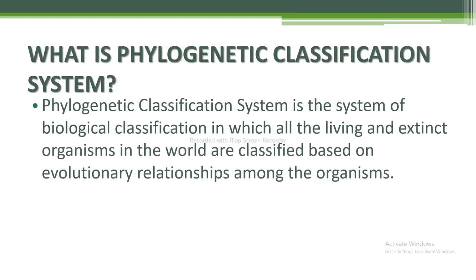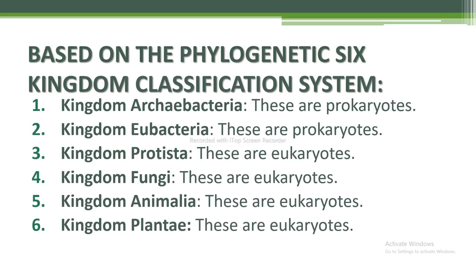What is the phylogenetic classification system? The phylogenetic classification system is the system of biological classification in which all living and extinct organisms are classified based on evolutionary relationships. Based on the phylogenetic six kingdom classification system, the kingdoms are: Archaebacteria (prokaryotes), Eubacteria (prokaryotes), Protista (eukaryotes), Fungi (eukaryotes), Animalia (eukaryotes), and Plantae (eukaryotes). Biological classification has divided living organisms into two types: prokaryotes and eukaryotes. Prokaryotes are divided into Archaebacteria and Eubacteria; eukaryotes are divided into Protista, Fungi, Plantae, and Animalia.